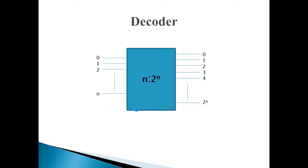Decoder is a circuit which is used to decode information in one form into another form. As a decoder is used to decode information, it has n inputs and corresponding outputs — that is, a many-to-many relation. To be very specific, if there are n inputs, then there will be 2 raised to n corresponding outputs.